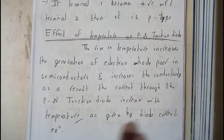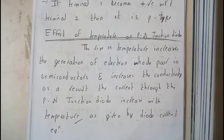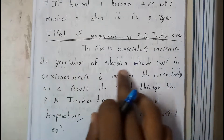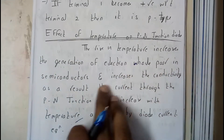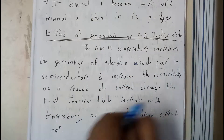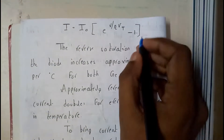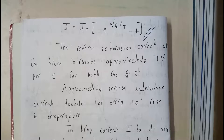By the diode current equation we can justify that. The rise in temperature increases the generation of electron-hole pairs, and as a result the current through the P-N junction diode increases. We can prove that using this equation: I equals I-naught into E power V by Eta-Vt minus 1.